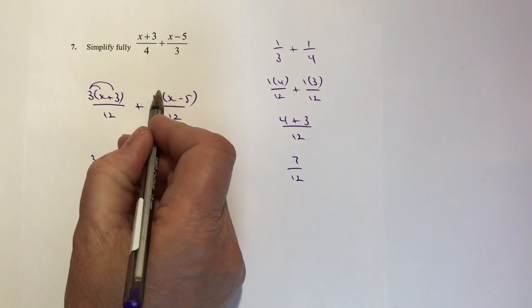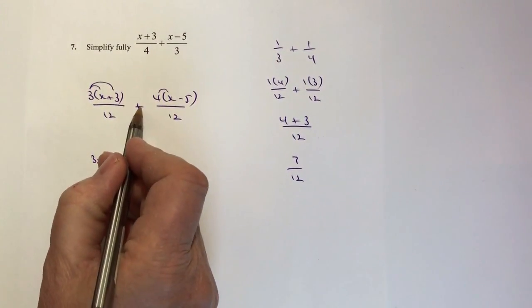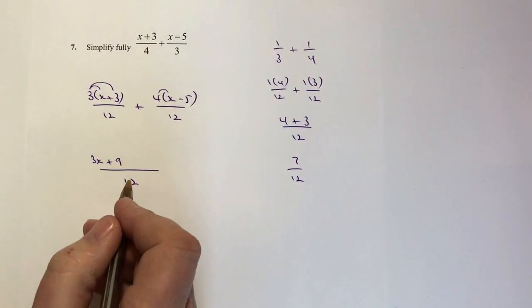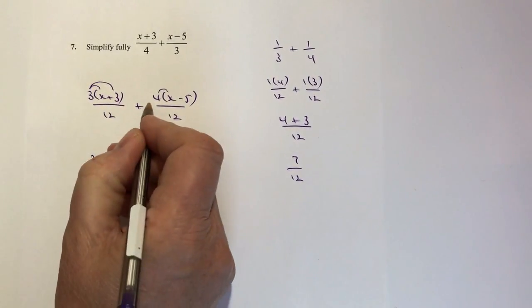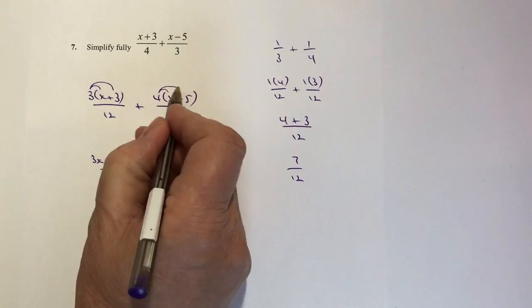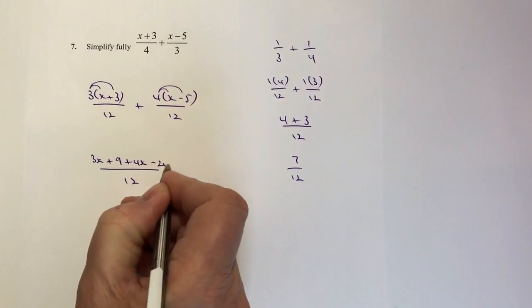So the next bit is 4 times x. Remember, it's plus 4 times x, which is plus 4x, and then plus 4 times minus 5. Well, that's going to be minus 20.